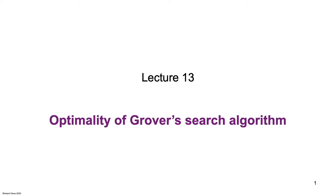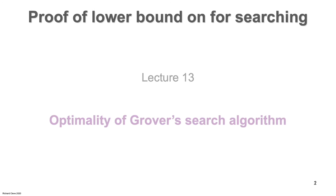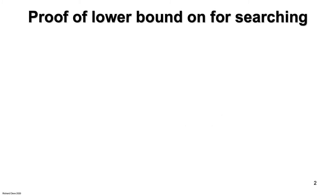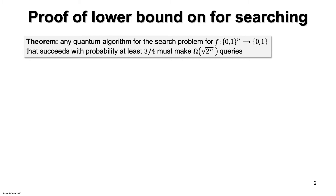Welcome to lecture 13. In this lecture, I will show you a proof that Grover's search algorithm, which I explained in the previous lecture, is optimal in terms of the number of black box queries that it makes. I am going to show you a sketch of a proof of this theorem that any search algorithm which succeeds with probability 3/4 must make order square root of 2 to the n queries to the black box, where n is the number of bits that the function acts on.